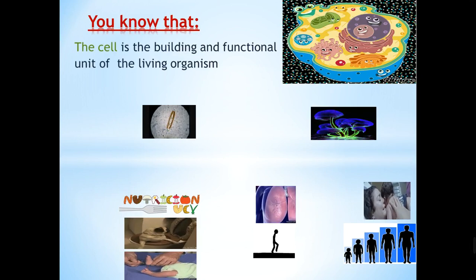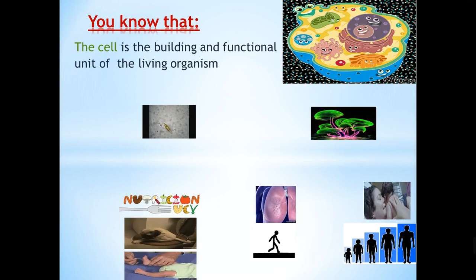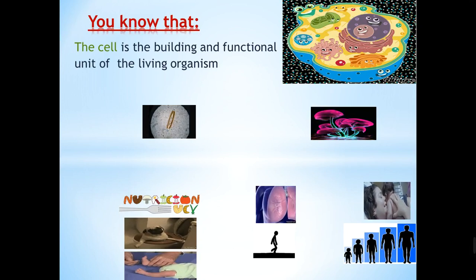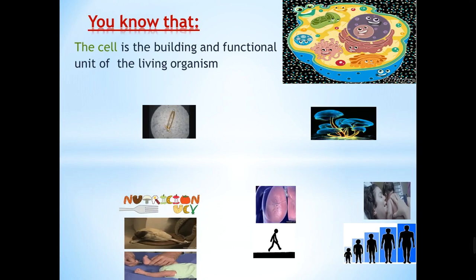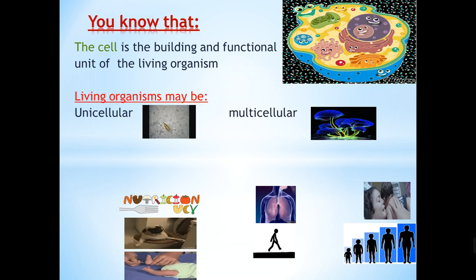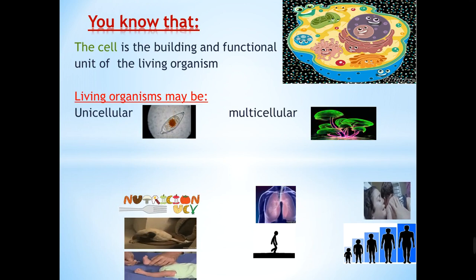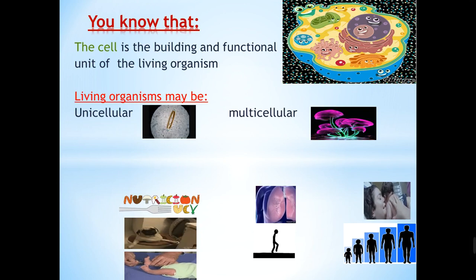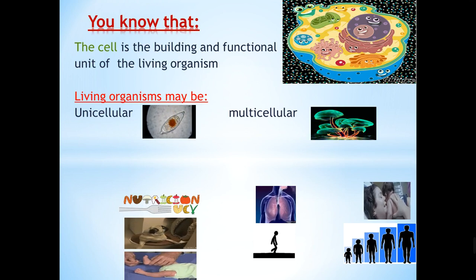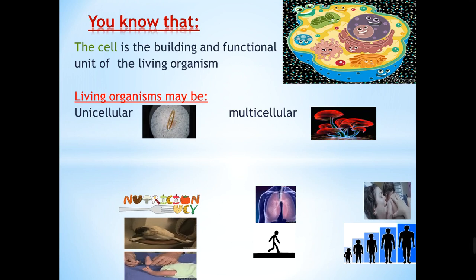All of us know that the body of the living organism consists of systems, and the systems consist of organs, and the organs consist of tissues, and tissues consist of cells. So the cells are the building units and functional units of all living organisms. Living organisms may be unicellular — meaning their entire body consists of one cell only, visible only under a microscope — or multicellular, meaning their bodies consist of more than one cell.